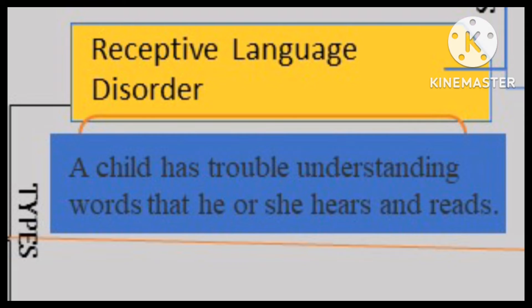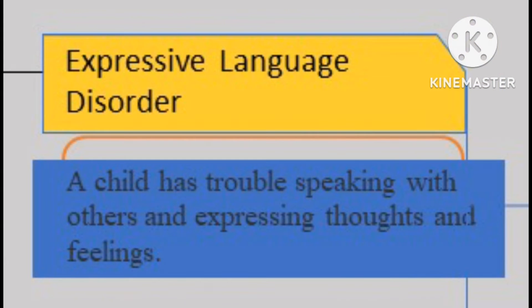Likewise, written words may be difficult to process, and simple gestures of coming, cooing, or sitting still are also difficult to understand. Second, a language disorder that occurs when children are unable to regulate their thoughts, ideas, and feelings using language is known as expressive language disorder.